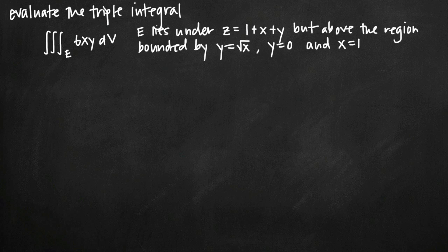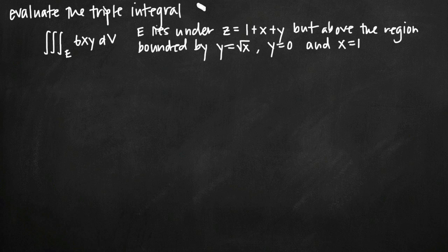Today we're going to be talking about how to evaluate a triple integral. In this particular problem, we've been given the triple integral of the region E, which is going to be found by taking the triple integral of the function 6xy. We've also been told that this region E, this volume, lies underneath the plane z equals 1 plus x plus y, but also above the region bounded by these three functions: y equals the square root of x, y equals 0, and x equals 1. With a triple integral problem like this, we're going to want to turn this triple integral problem into a triple iterated integral problem.